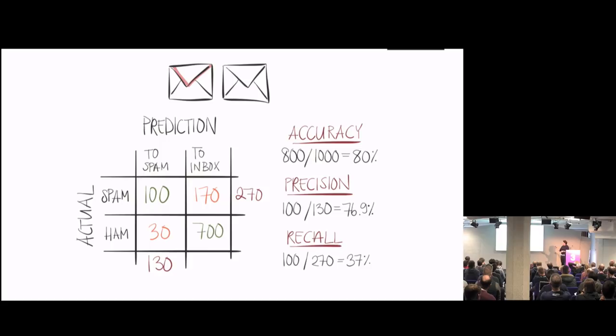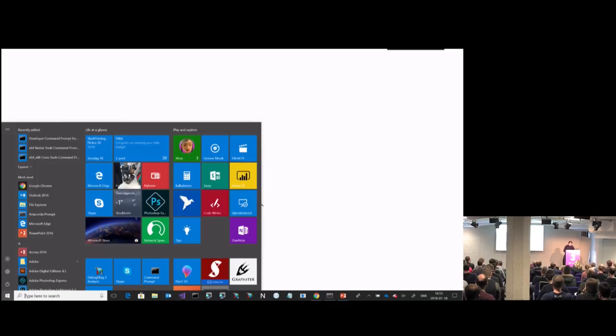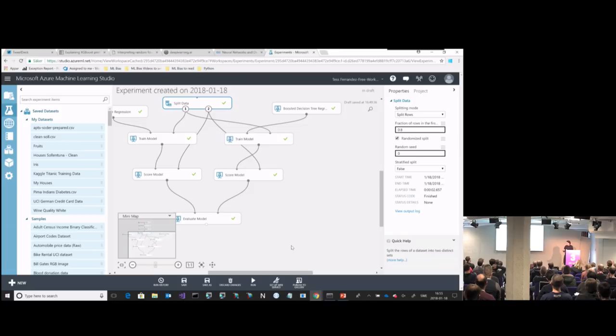You can also determine algorithm parameters through code by specifying what you want to optimize, and it will do a grid search and figure out what parameters perform best. Finally, use the answer. In Azure ML, you can create a web service out of this — pass in input parameters and it gives you the answer. Or batch processing where you send in an Excel file and it automatically rates everything. We should also continuously retrain the model because things will change.